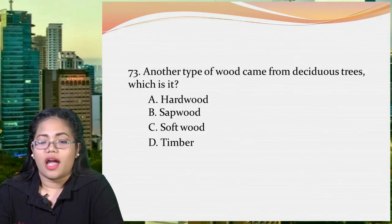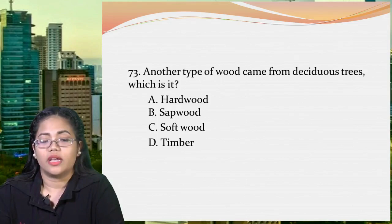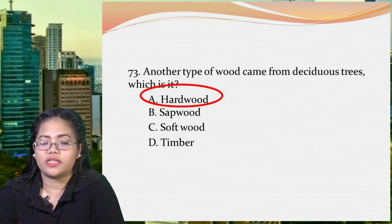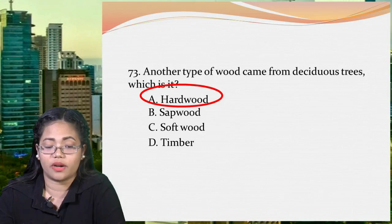Next question: another type of wood that comes from deciduous trees is A: hardwood, B: sapwood, C: softwood, or D: timber. The correct answer is A, hardwood. Hardwood is from deciduous trees; softwood is from coniferous trees; sapwood is a part of a wood's internal structure; and timber is wood prepared for use in building and carpentry.